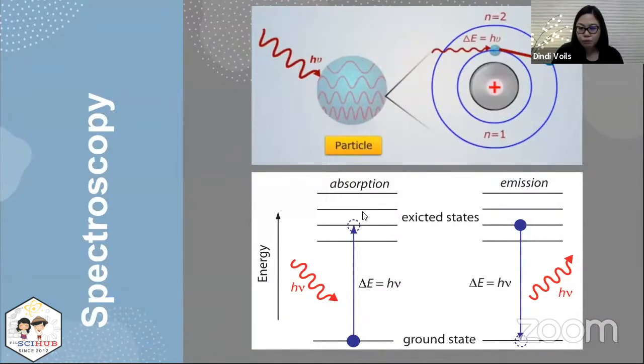And the excited state is not very stable. So naturally, the particle would want to go back to a more stable state or the ground state. And in that process, the energy that was absorbed theoretically will be released as energy with the same magnitude. So that process is called emission. This is the basic principle involved in spectroscopy.